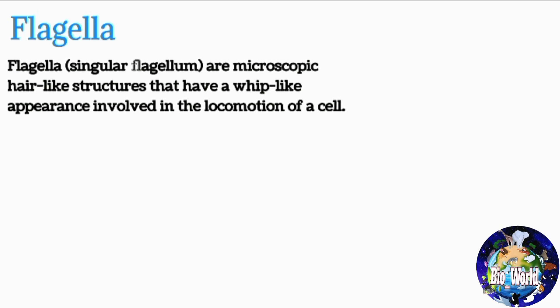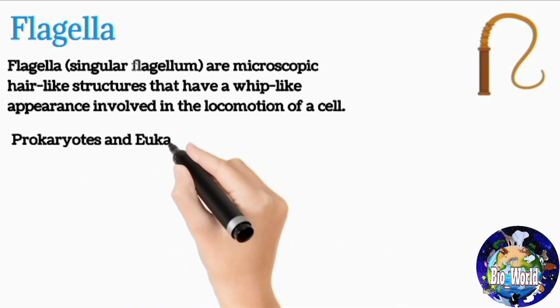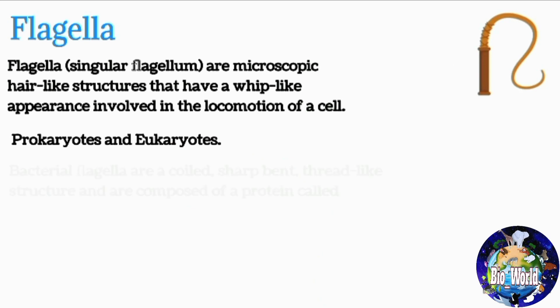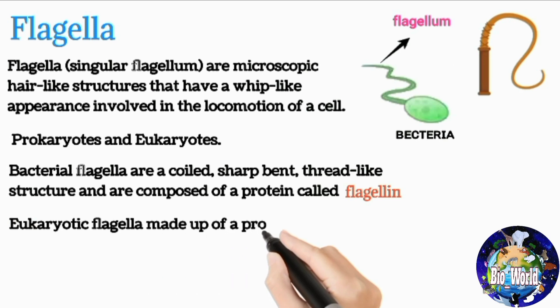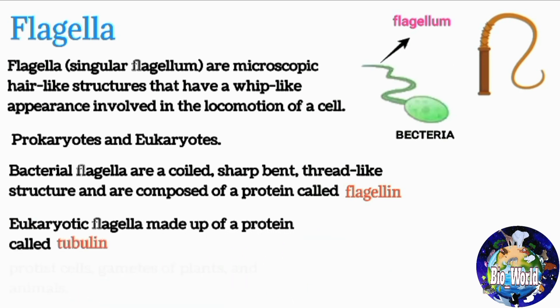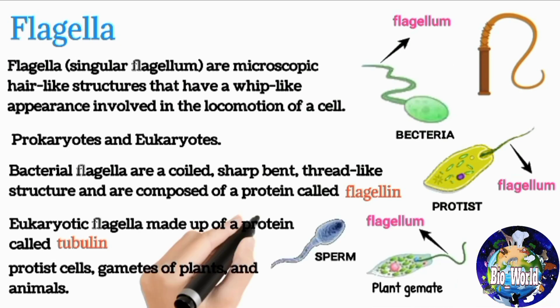Flagella are microscopic hair-like structures that have a whip-like appearance, involved in the locomotion of a cell. They are found in both prokaryotes and eukaryotes. Bacterial flagella are coiled, thread-like structures composed of a protein called flagellin. Eukaryotic flagella are made up of a protein called tubulin. Eukaryotes with flagella include protist cells and gametes of plants and animals.